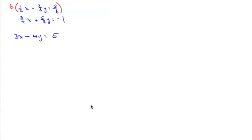Multiply the bottom one by 8. And 8 times 3 fourths is 6, so we get 6x plus 8 times 5 eighths — that's 5y — and then 8 times negative 1 is negative 8.